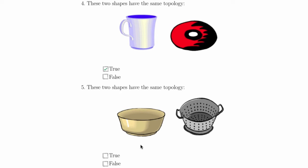For question 5, does a bowl and a colander have the same topology, and this is false. The colander has hundreds of holes in it, and so it has a very different topology than a bowl, although they do have the same geometry, so this question is false.